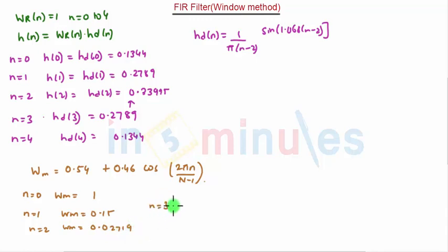When n is equal to 3, again due to similarity property, it will be again 0.15. And when n is equal to 4, W of m is given as 1. Now we will calculate H of n that is multiplication of HD of n and W of m.